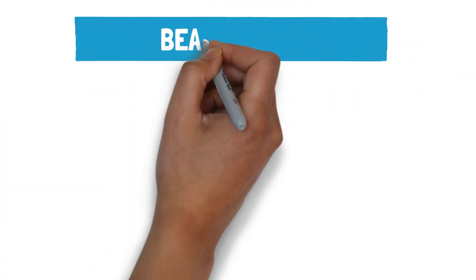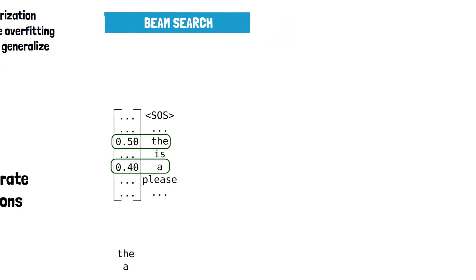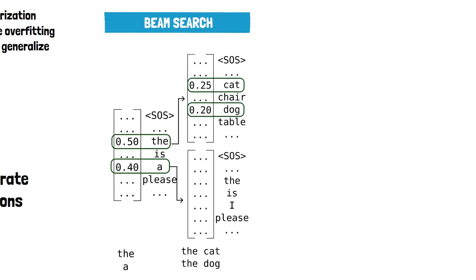Instead, we can use the beam search algorithm to look at multiple possibilities at each step, maintaining only a fixed number of the most probable sequences so far, discarding the others.